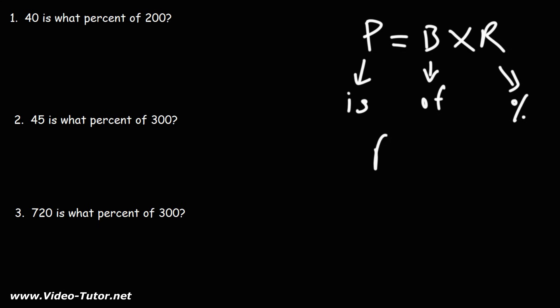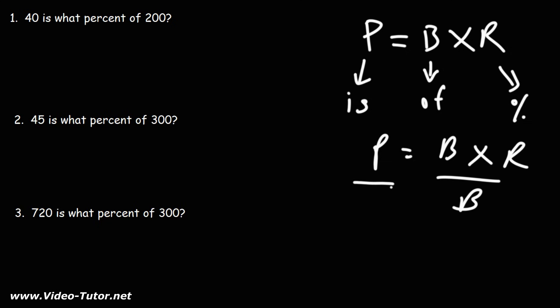To get R by itself, we need to divide both sides by B. So the rate, or the percentage, is going to be the part divided by the base.